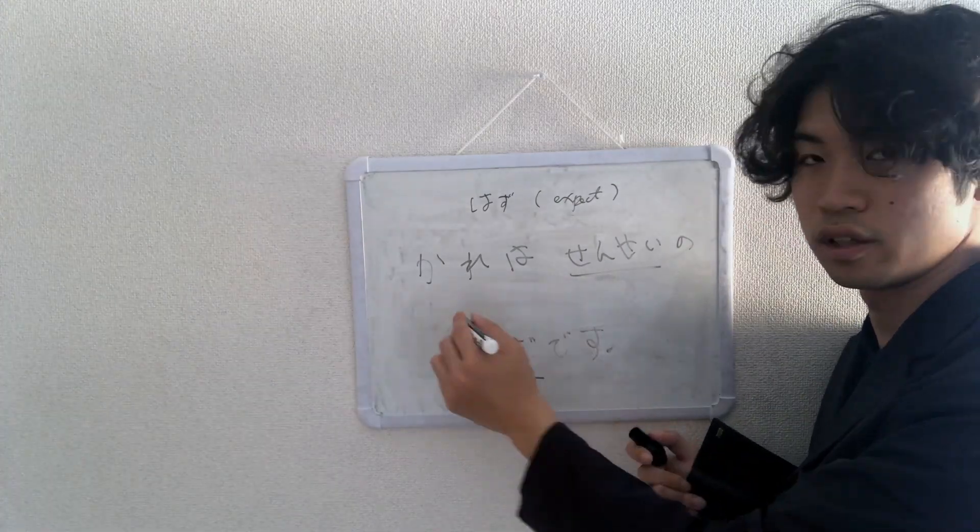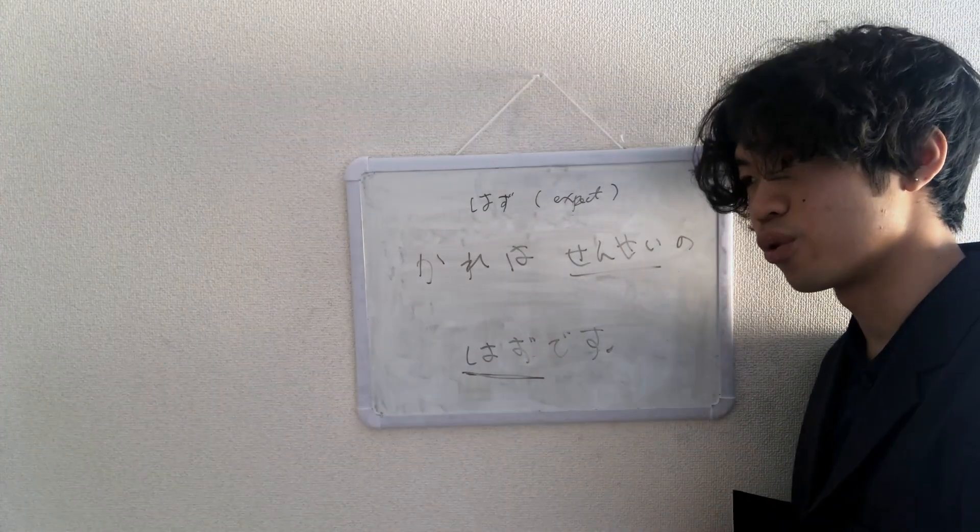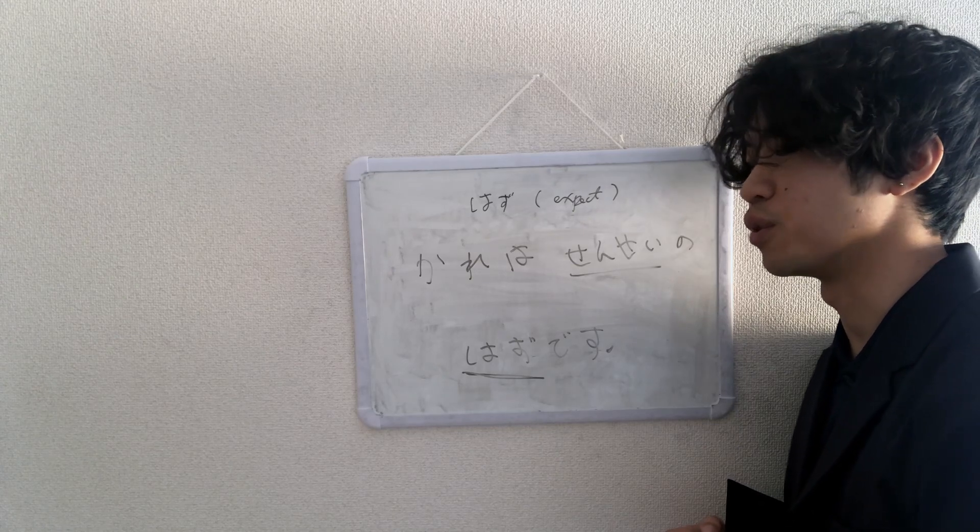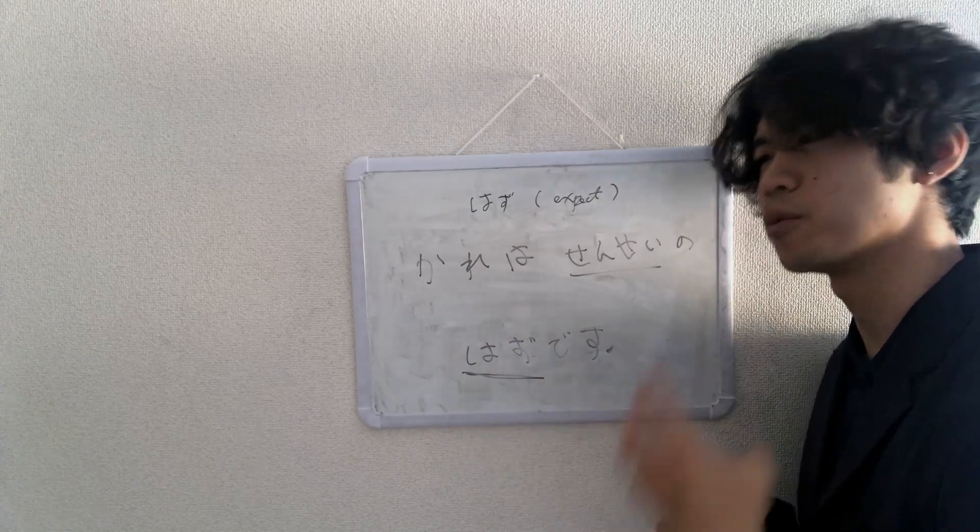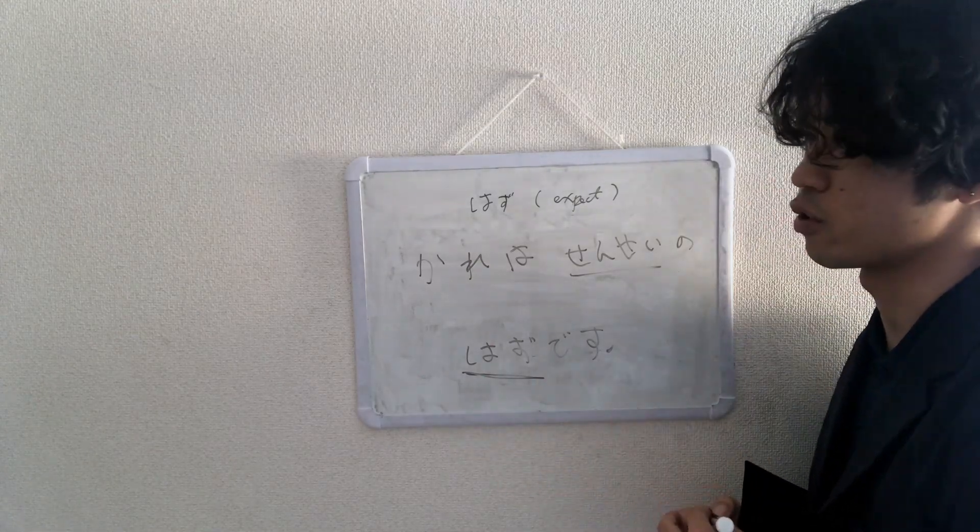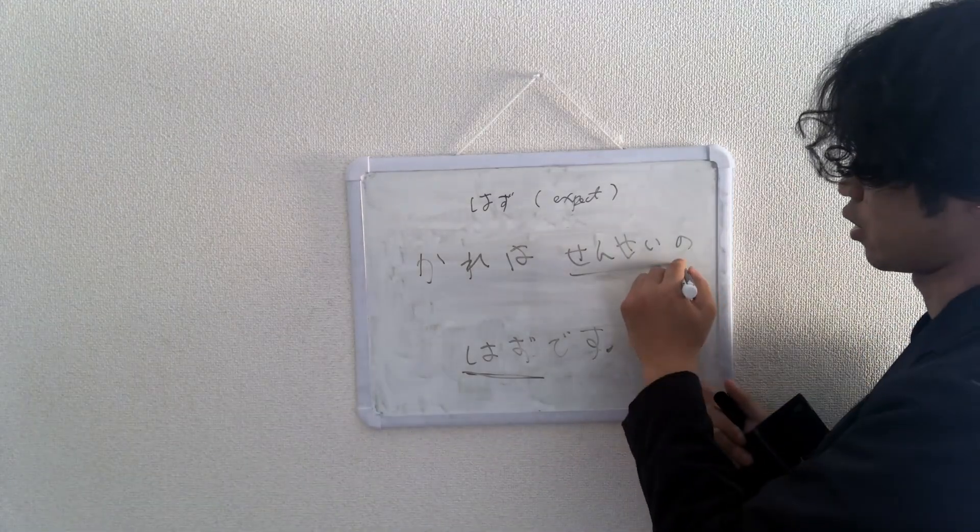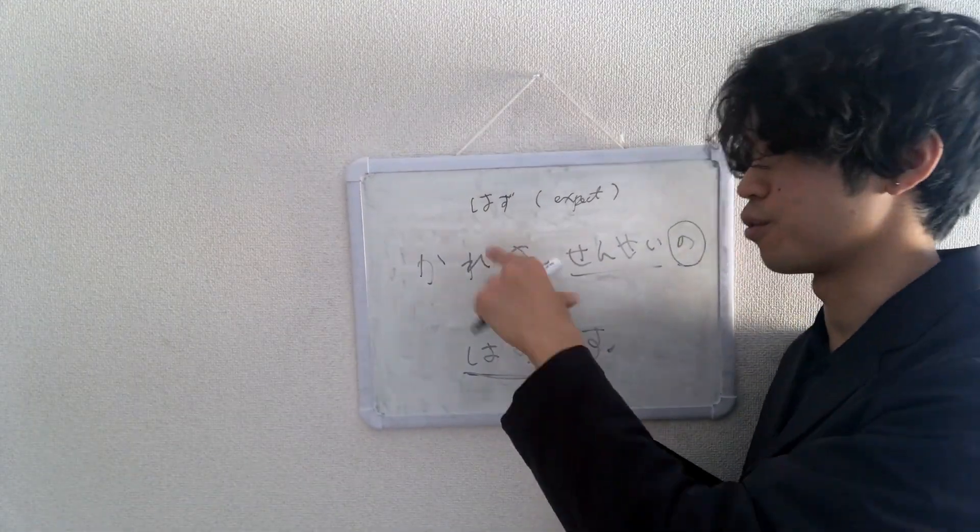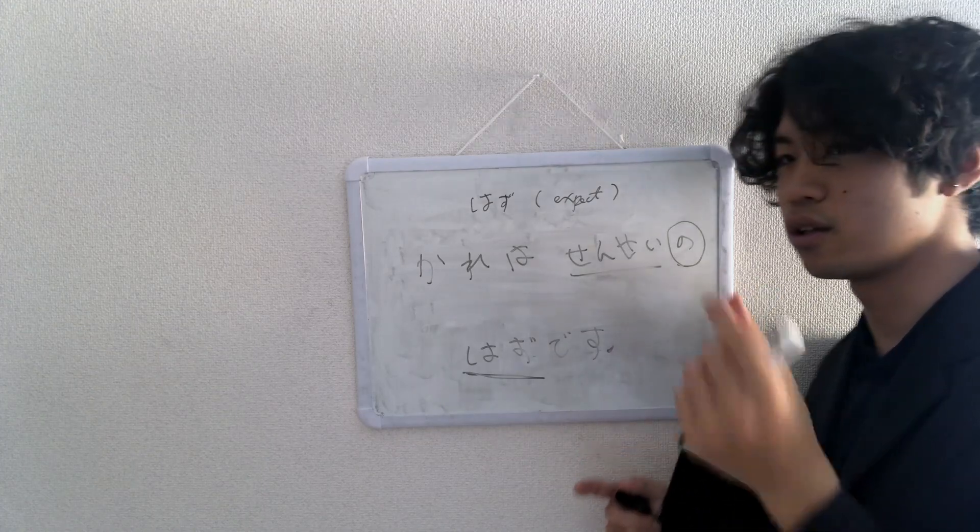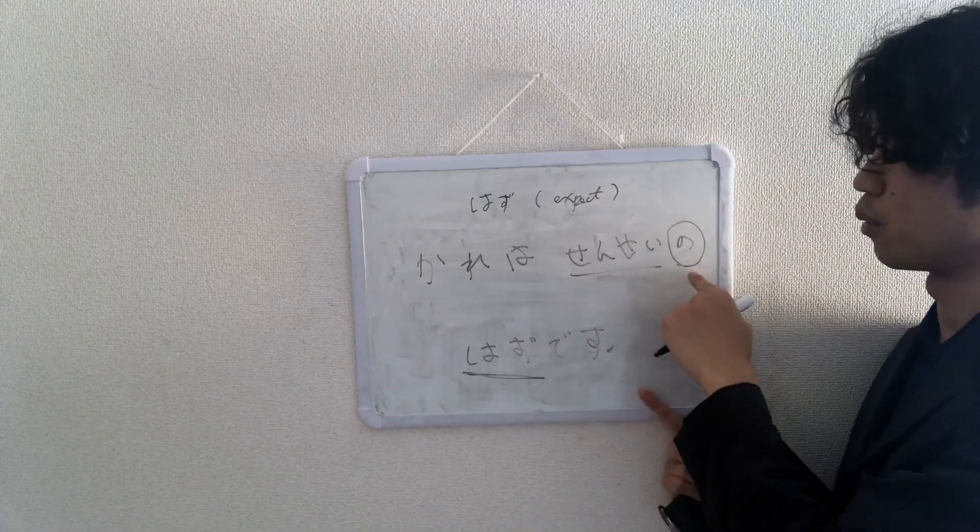So he should be a teacher, he's supposed to be a teacher. Maybe he told me that he taught something. In that situation you use はず. Now, let's look at here. の. It's slightly different from な, because you want to have な in な-adjective, but for nouns, you want to have の.